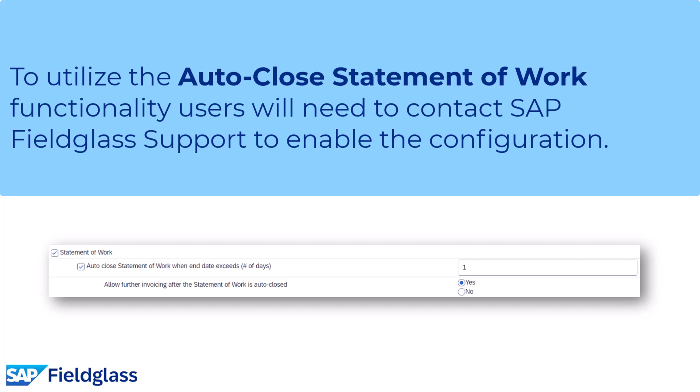To utilize the Auto-Close Statement of Work functionality, users will need to contact SAP Fieldglass support to enable the configuration. Users can set a time frame after which a Statement of Work is automatically closed — this can be any number of days between 0 and 365. Users will also have the option to determine if further invoicing will be allowed after the Statement of Work is Auto-Closed.